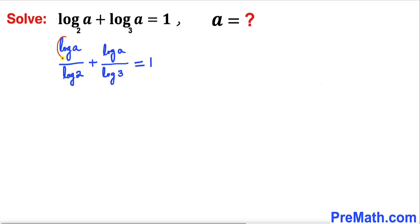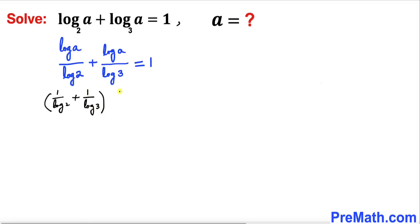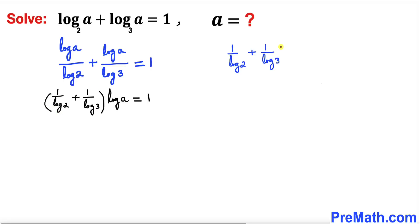We can see that log of a appears in both terms, so we can factor it out. This gives us: (1 over log 2 plus 1 over log 3) times log of a equals 1. Now let's focus on the expression inside the parentheses.